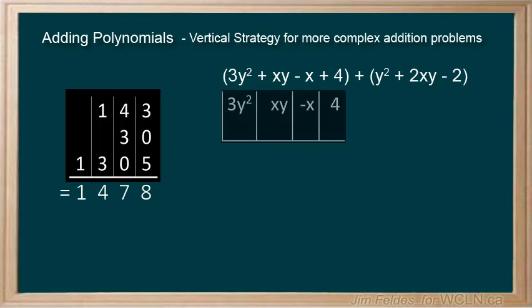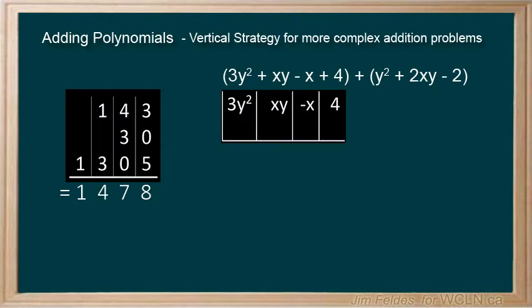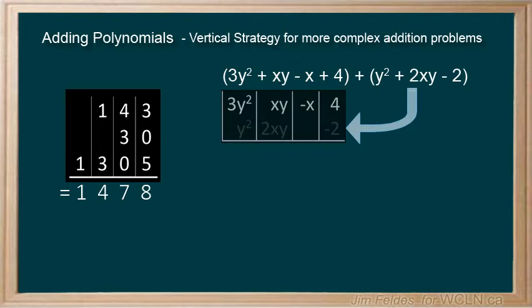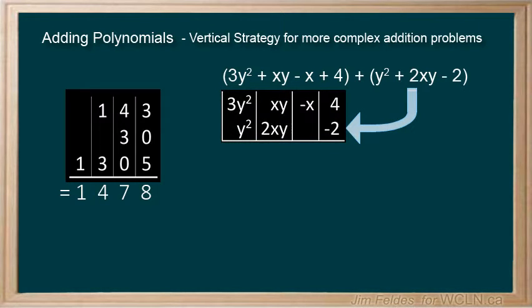Give each term a column for the first polynomial, making sure to include negative signs for negative terms. Then line up the matching terms for the second polynomial in the row below. You may have noticed we have a space without a term. This is similar to a number where one of the place values has no value, so zero is needed to make sure the columns still line up.